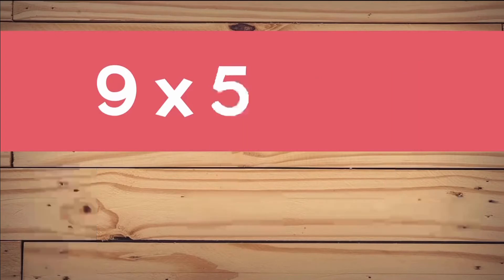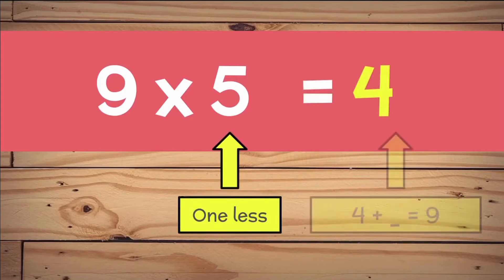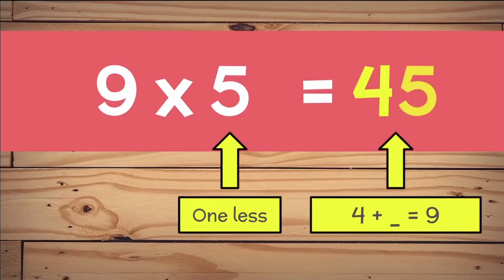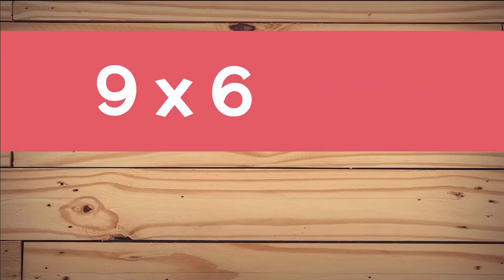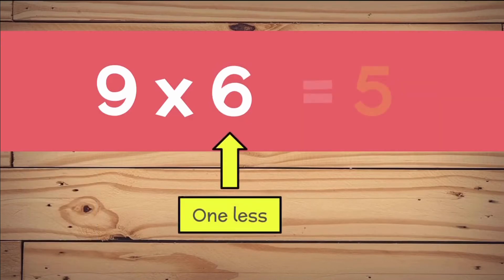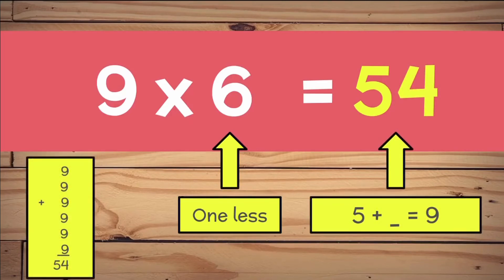9 times 5. 5 take away 1 equals 4. And 4 plus 5 equals 9. Let's check — 9 plus 9 plus 9 plus 9 plus 9 does equal 45. 9 times 6. 1 less than 6 is 5. And 5 plus 4 more equals 9. Let's check — yes, we're right.